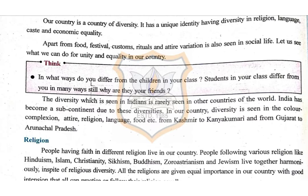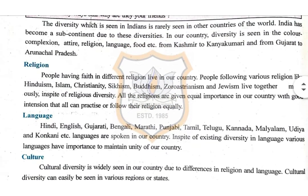Let us see what we can do for unity and equality in our country. The diversity which is seen in Indians is rarely seen in other countries of the world. India has become a subcontinent due to these diversities. In our country, diversity is seen in the color, complexion, attire, religion, language, food etc. from Kashmir to Kanyakumari and from Gujarat to Arunachal Pradesh.